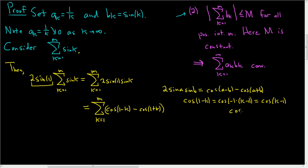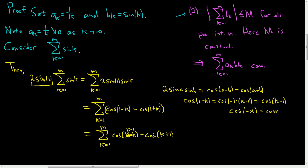So let's rewrite our sum one more time. This is equal to the finite sum as k runs from 1 to m of cos(k − 1) − cos(k + 1). That is our finite sum.